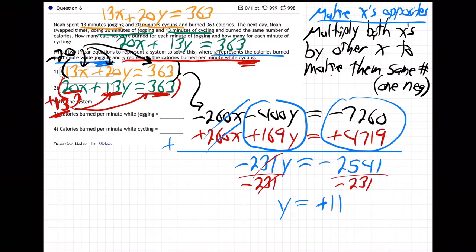11, that's cycling right? Isn't Y cycling? Yeah, Y cycling, that goes here, that 11 goes right there. That's cycling. And now once you've got one answer, plug it in. You know how to do this right? Plug this in.